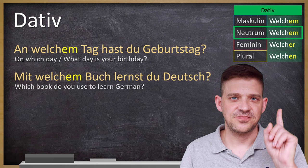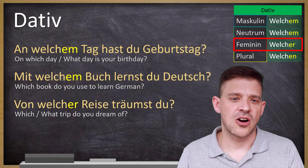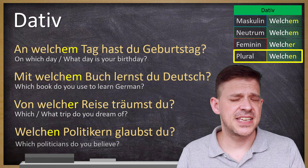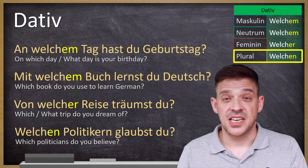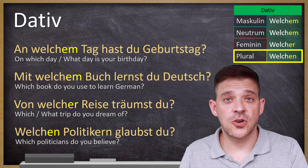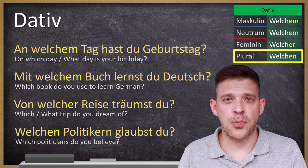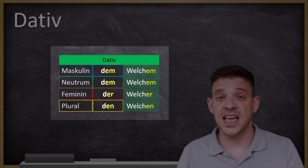Feminin: Von welcher Reise träumst du? — Which trip are you dreaming of? At the moment probably a lot of people dream of taking a trip somewhere. Und Plural: Welchen Politikern glaubst du? — Which politicians do you believe? There's no preposition here, but it's Dativ because of the verb glauben — glauben ist ein Dativ-Verb. The definite articles in Dativ are dem, dem, der, den — and you can see the endings for welch are exactly the same.